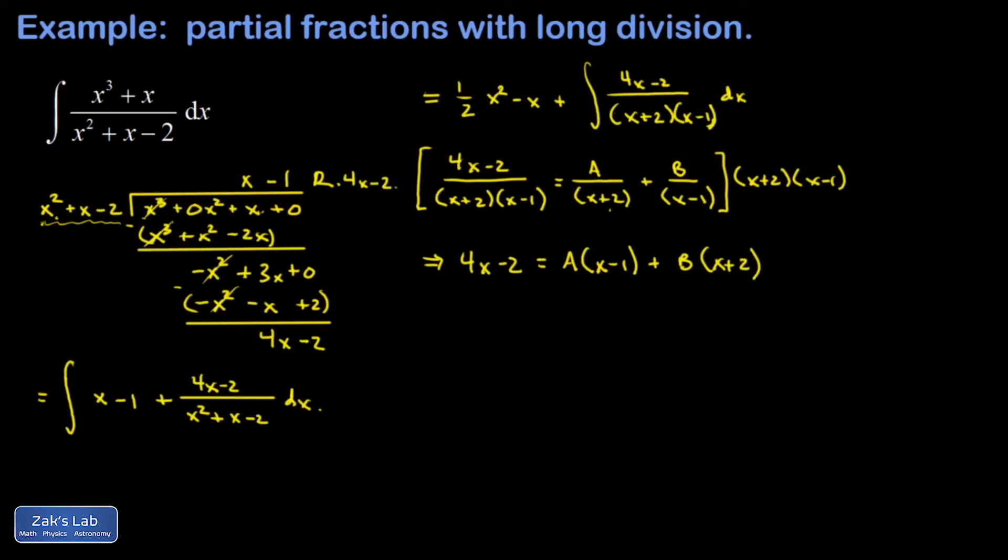And I can quickly find A and B this time by subbing in different values of x. So if I sub in x equals 1, then the left-hand side here becomes 2. The A containing term dies, and then the B containing term has a 3 stuck to it. Remember, I replaced x with 1. And I've immediately got B.